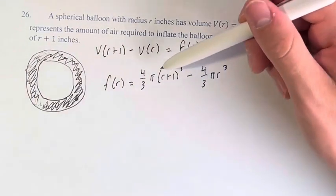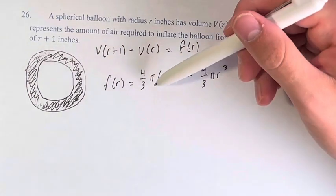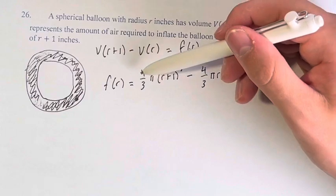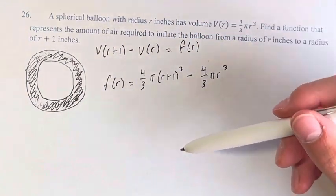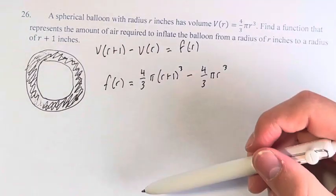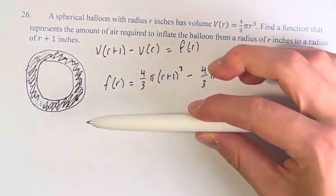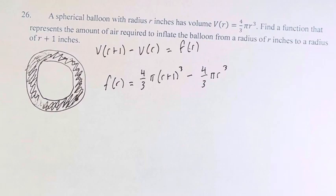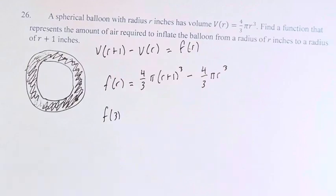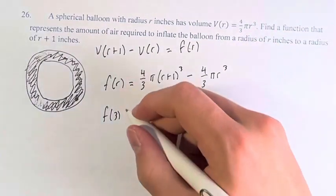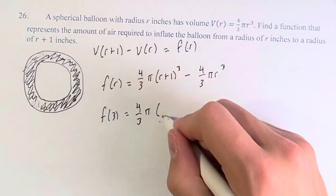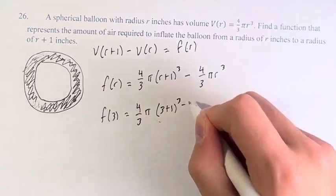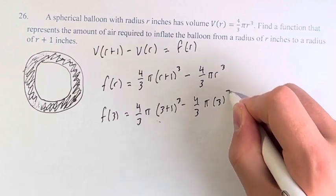Now, you can distribute this out, and you'd get like four terms, all with 4/3 π on the front of them, five in total. So I don't think it helps to actually solve for any particular r to do five separate terms. For example, if r was 3, we're looking to go from 3 to 4 inches. f(3) would be 4/3 π (3+1) cubed minus 4/3 π (3) cubed.